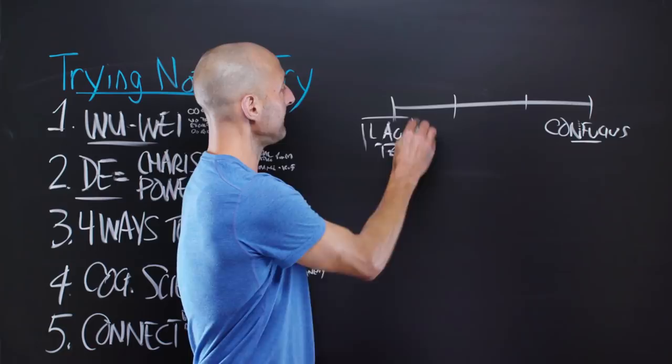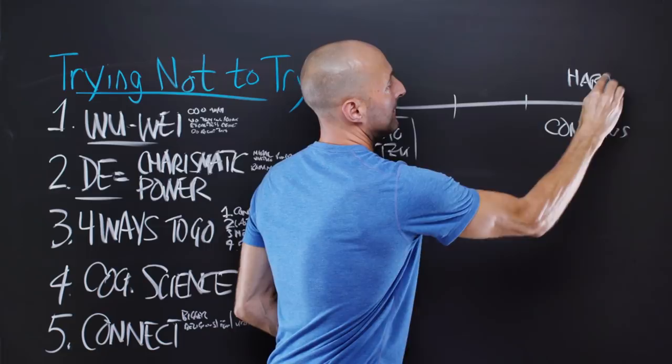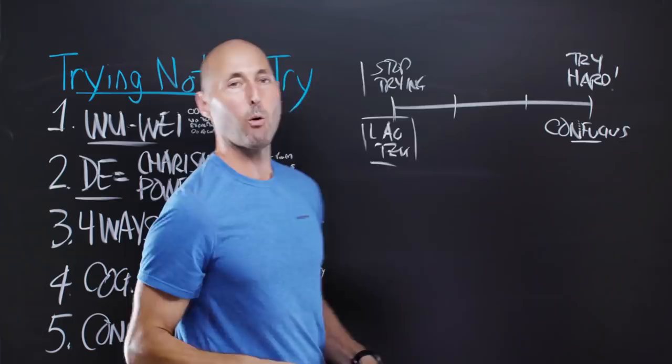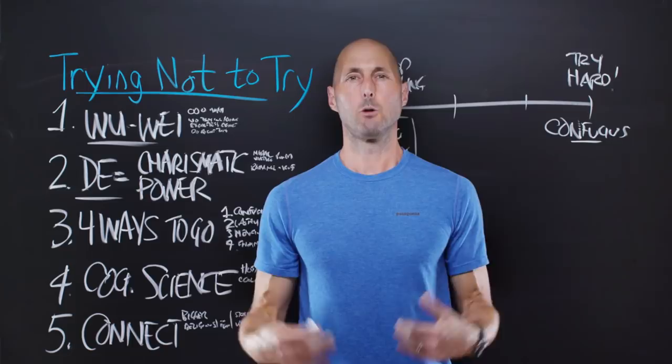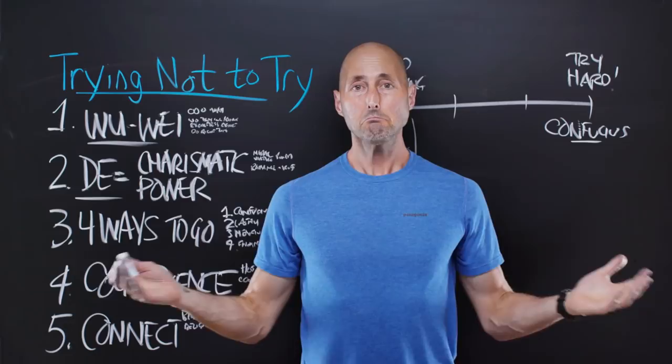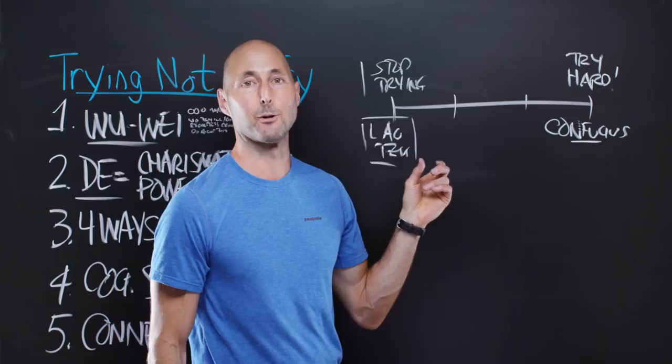Lao Tzu had basically the exact opposite approach. So, try hard was Confucius' mantra, right? And then Lao Tzu was, stop trying. And he went extreme. He basically said, you know what? I'm going to check out of society entirely. I'm going to move into the countryside. I'm going to grow my hair long. I'm going to change my name. I'm just going to drop out. I'm going to stop trying entirely. And I'm going to be completely one with that bigger force. That's how I'm going to arrive at that point of wu-wei.